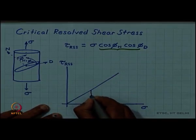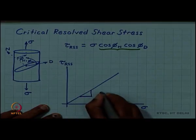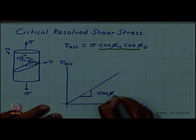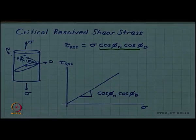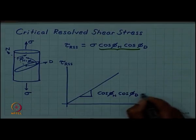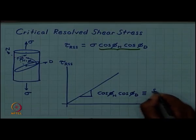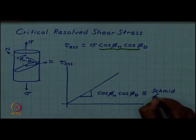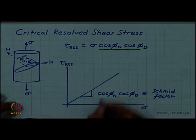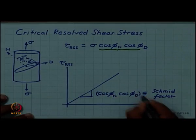And the slope is expected to be cos phi n cos phi d. Sometimes this factor is called a Schmid factor. This product is called the Schmid factor.